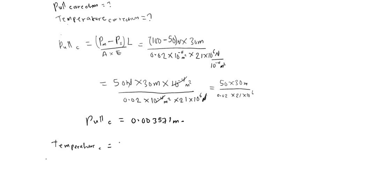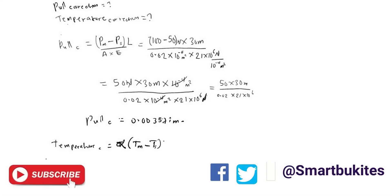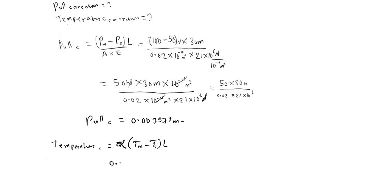For the temperature correction, the formula is: temperature correction = α × (temperature during measurement − standard temperature) × length of tape. Here α is 0.0000117 per degree centigrade, the temperature difference is 28 − 18 = 10 degrees, and the tape length is 30 meters. This gives a temperature correction of 0.00351 meters.